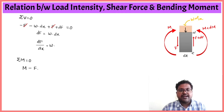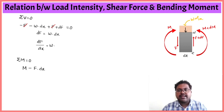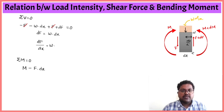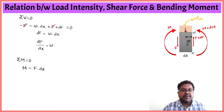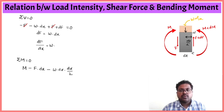Force F acting at a distance dx causes an anti-clockwise moment, so it is minus F into dx. The load w into dx acts at a distance of half of dx, that is dx by 2, and it is acting downwards creating an anti-clockwise moment, so it is minus w into dx into dx by 2.